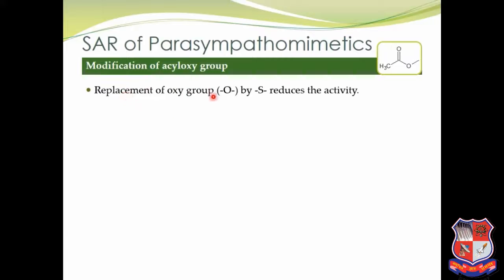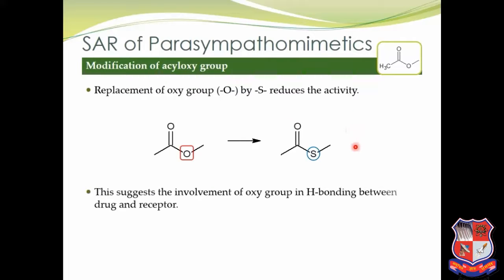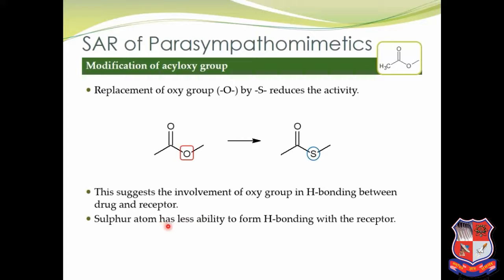Replacement of the oxy group by sulfur reduces the activity. This is because the oxy group is involved in hydrogen bonding between the drug and the receptor, suggesting that the oxygen atom is required to form a hydrogen bond with the receptor, while sulfur has less ability to form H-bonding with the receptor. This is the SAR of Acetylcholine.